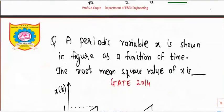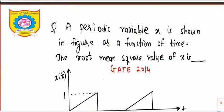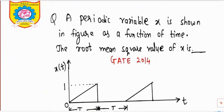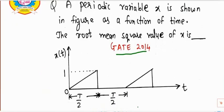Next: a variable x is shown in the figure as a function of time — find the root mean square value of x. This is a GATE examination question from the year 2014. The first step is to find the time period. As you can see, T/2 and T/2 are given, so the overall period is capital T.